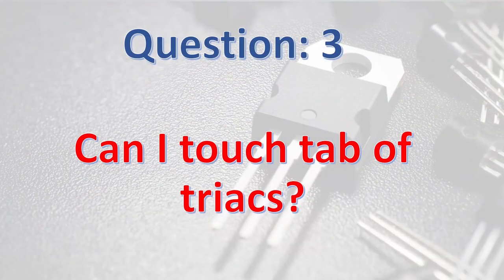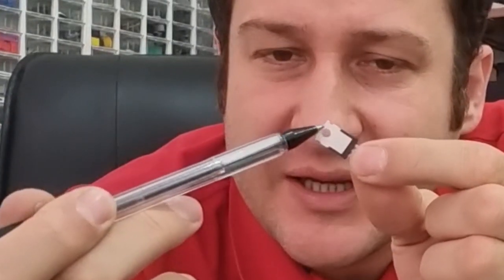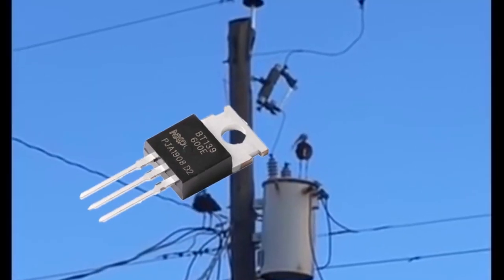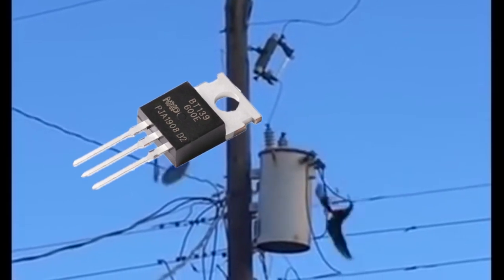Question number three: Can I touch the tab? Here, the metallic part of component is named tab. Its main job is to hold a heat sink to cool down the component. It is obvious, yes, you can touch it, but it is likely that it will electrocute you. In most part numbers, it is connected to one of anodes. Since anodes are usually connected to high voltage, touching this area may cause electrical shock or even death. Before touching the tab or the heat sink, you must check the datasheet to ensure that the tab is connected to main voltage or not.